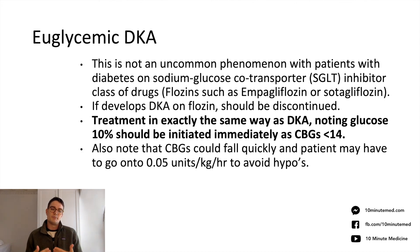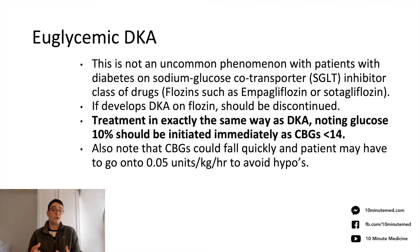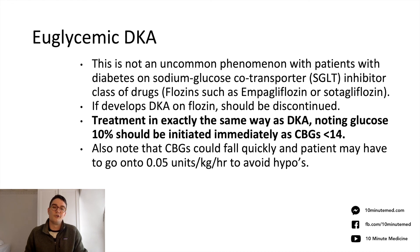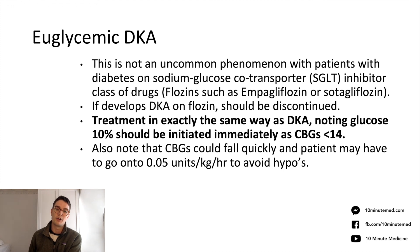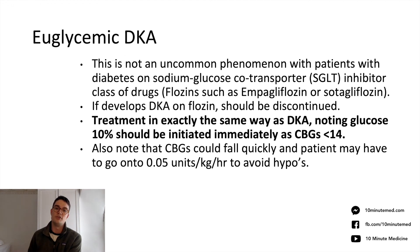Worth considering as part of the updated guidance: patients on Flozins (SGLT2 inhibitors) are at high risk of euglycaemic diabetic ketoacidosis. These drugs modify renal glucose reabsorption, causing renal glucose wasting, so a raised capillary blood glucose may not be present. Patients could have a normal or slightly raised blood glucose with raised ketones and a low pH fitting DKA criteria. These patients should be treated exactly the same as a normal DKA but should be started on a 10% dextrose infusion immediately when blood glucose is less than 14.